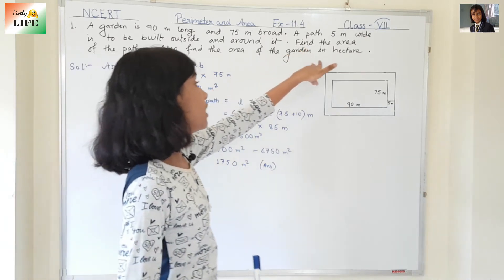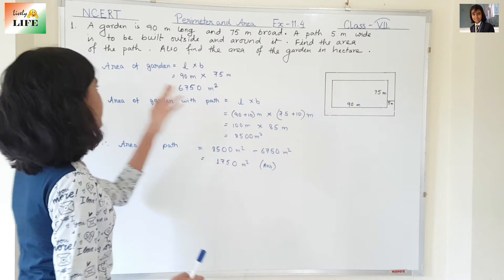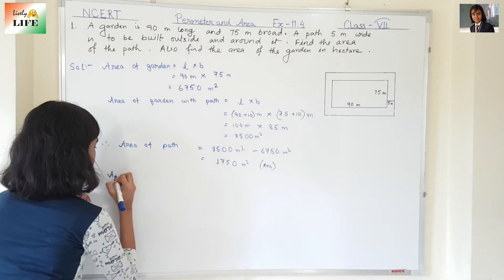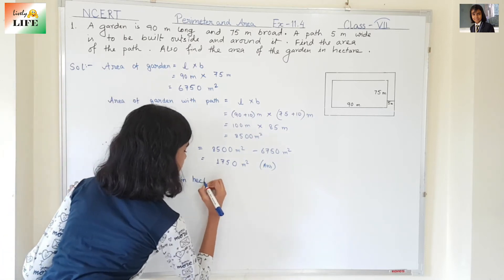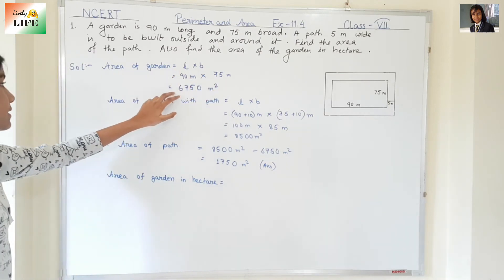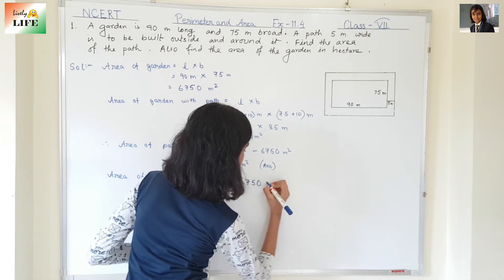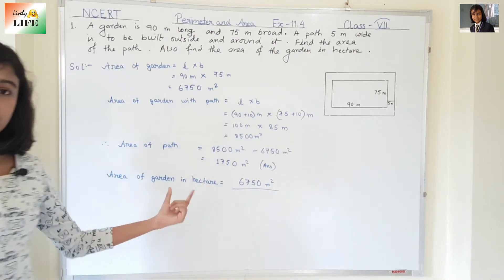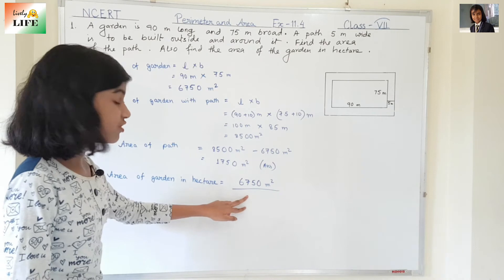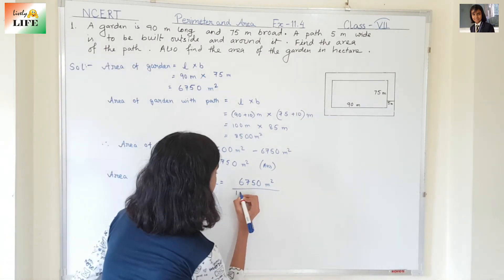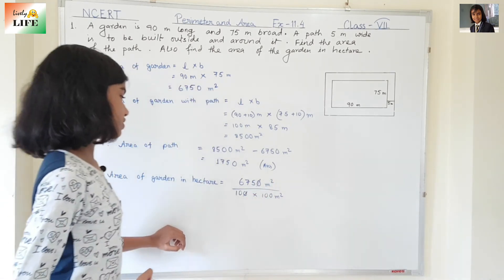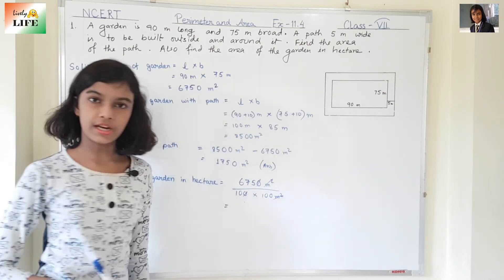Now also find the area of the garden in hectare. We already know the area of the garden — it is 6,750 meter square — but we need to convert this into hectare. The area of the garden in hectare equals 6,750 meter square divided by 100 into 100 meter square. You have to memorize this: to convert meter square to hectare, divide by 100 into 100 meter square. The zeros will cancel and meter square will also cancel, giving us hectare.